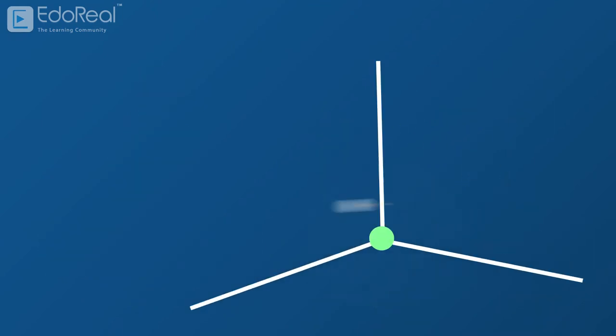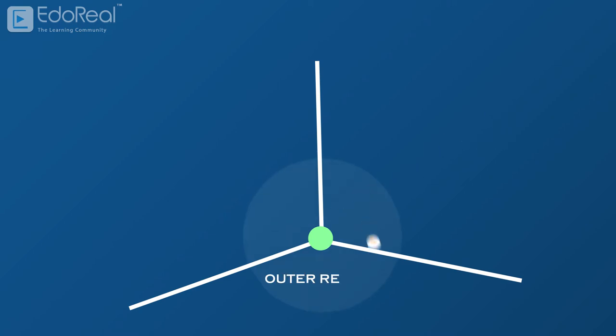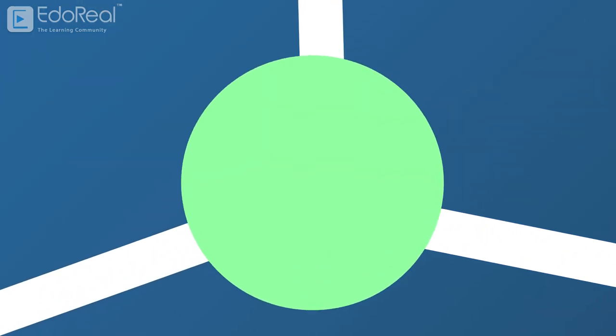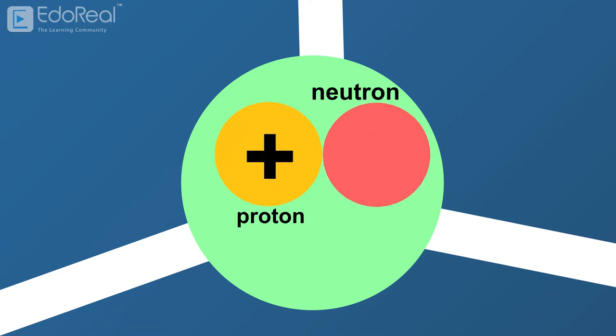An atom is composed of two regions: the nucleus and the outer region of the atom. The nucleus is in the center of the atom and contains two atomic particles called protons and neutrons.